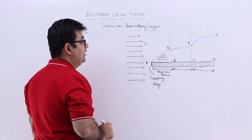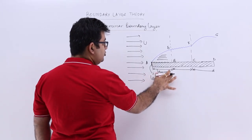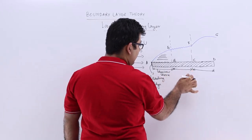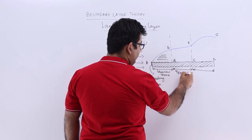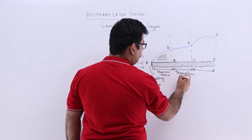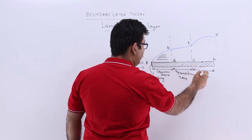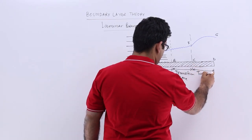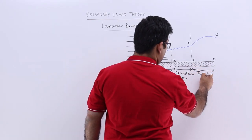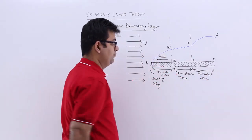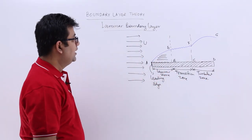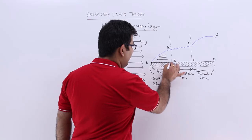From B to C you have a transition zone, which is from laminar to turbulent, and this becomes the turbulent zone.